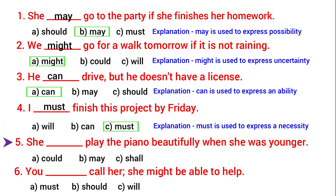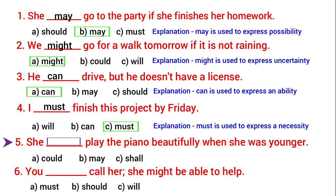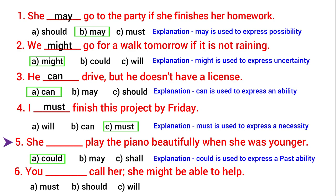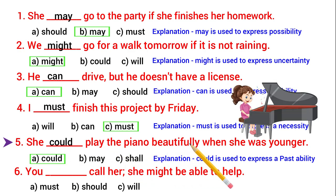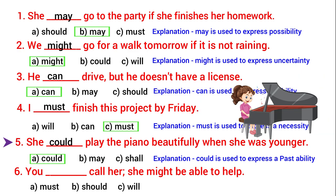Next: 'She blank play the piano beautifully when she was younger.' Could, may, or shall? Here I am going to use 'could', because we use 'could' to express a past ability. So she could play the piano beautifully when she was younger — here we are talking about her past ability, that is playing piano when she was younger.